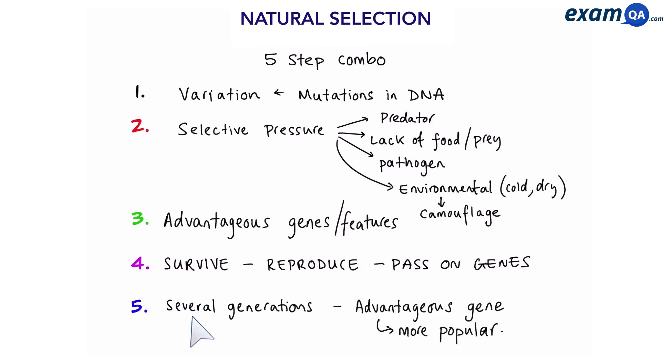And step five, over several generations, the advantageous gene becomes more popular or common.